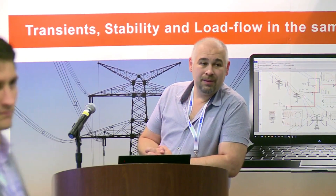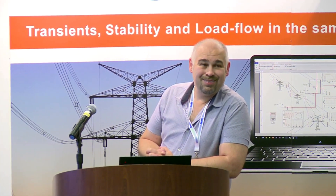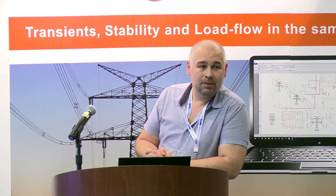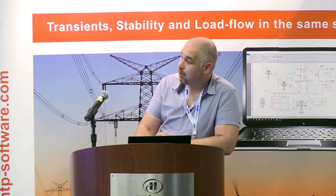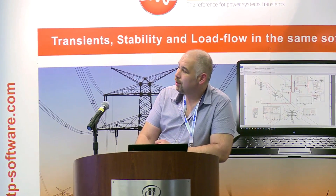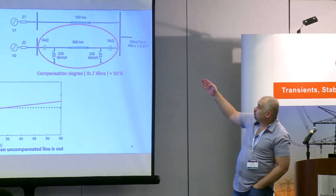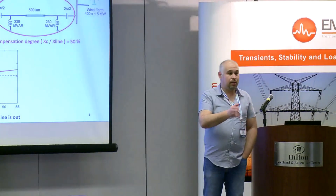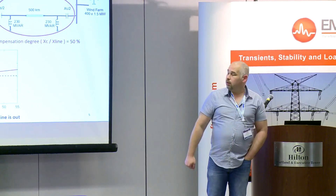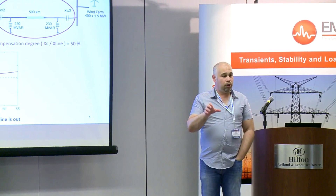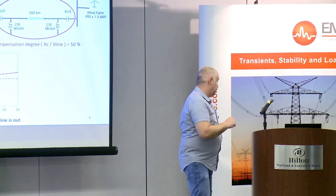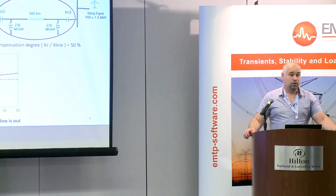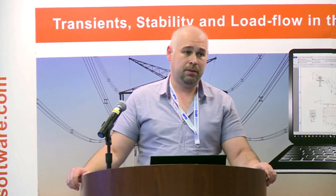Q&A: When modeling the wind turbine for the control interaction study, the internal network is included with cable representation using PI sections. The wind park is connected to the transmission system via transformer, with the internal cable network aggregated and represented with PI sections.